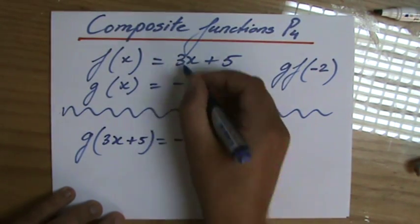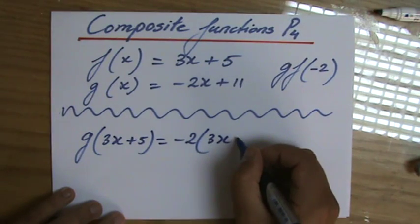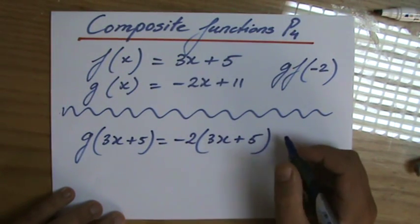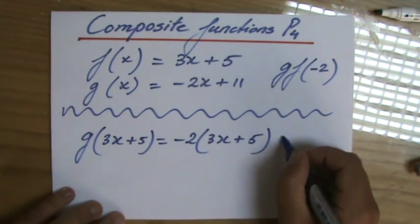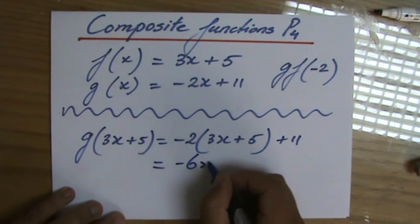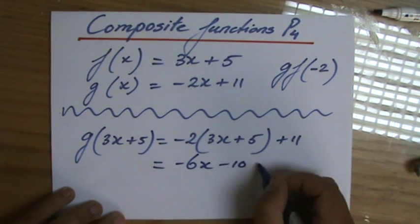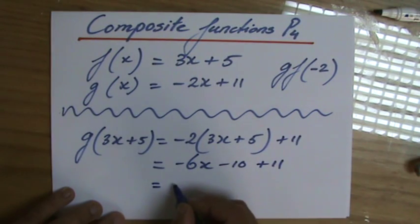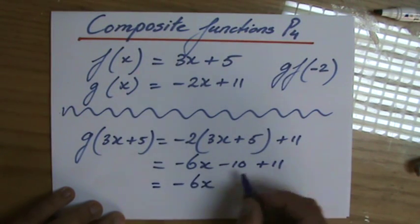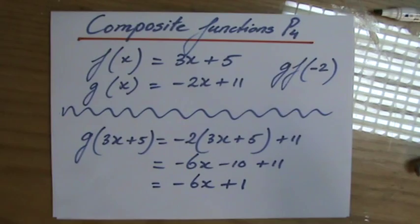So minus 2 times (3x plus 5), and then plus 11. Hang on. We expand that. Minus 6x minus 10 plus 11. And those are minus 6x's, and then add 1.